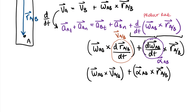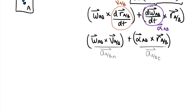So we end up with omega of AB crossed with V of A relative to B, plus alpha of AB crossed with R of A relative to B. The more obvious term on the right is the linear tangential acceleration of A relative to B. The omega cross V term is the time rate of change of the direction of V — which is the normal acceleration — so this is the acceleration of A relative to B normal. We took the relative velocity term and split it into a tangential and a normal component.